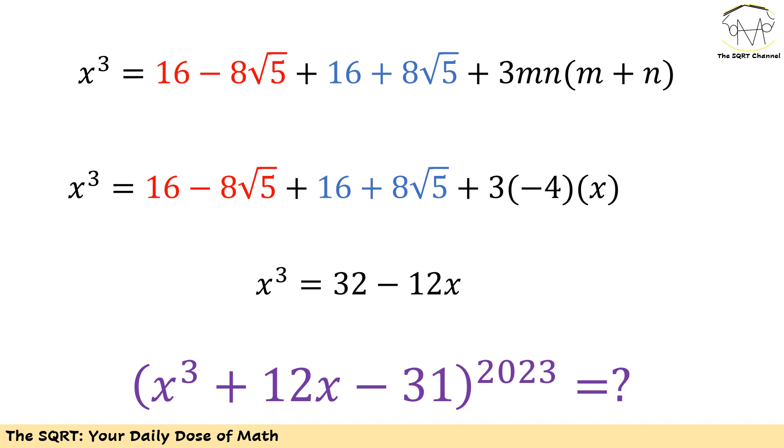Let's simplify everything. We are going to end up with x to the power of 3 equals to 32 minus 12x.